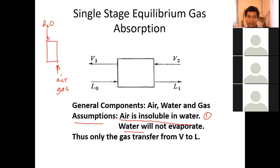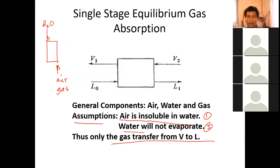The second assumption is: water will not evaporate. There is a small amount of water that will evaporate, but compared to the total amount flowing in the tower, it is negligible. So our two assumptions are: air is insoluble in water, and water will not evaporate. Thus, only the gas transfers from stream B (the gas stream) to stream L (the liquid stream).